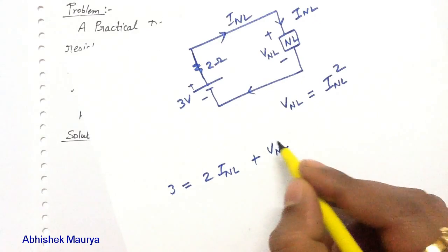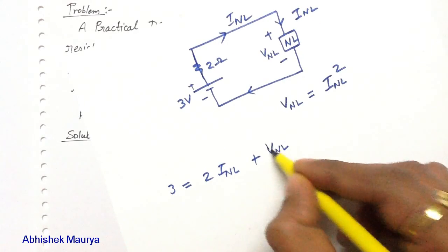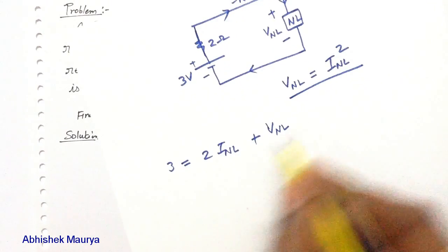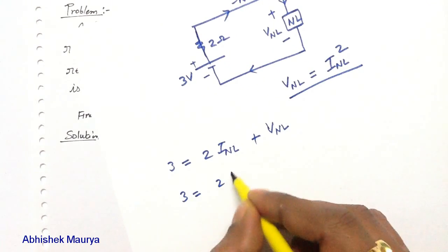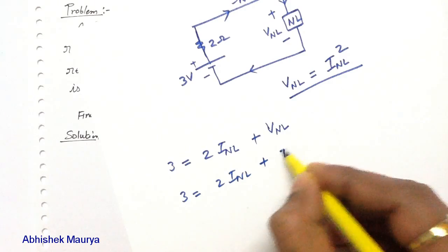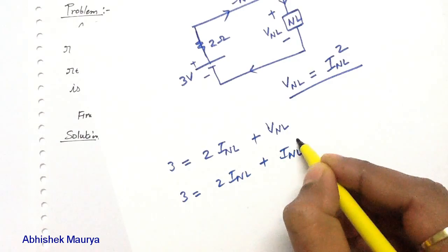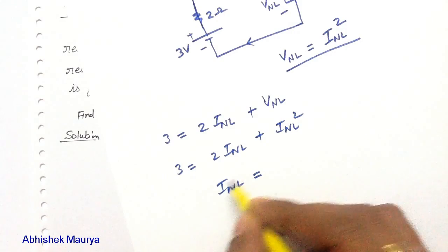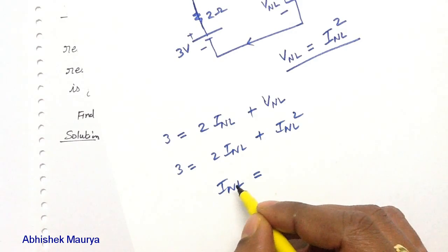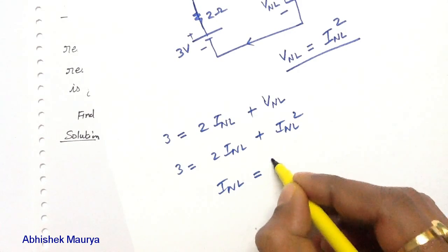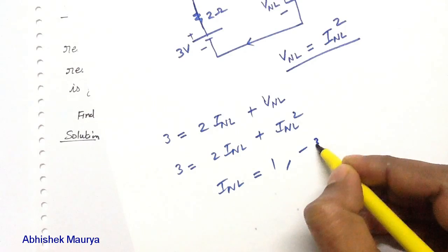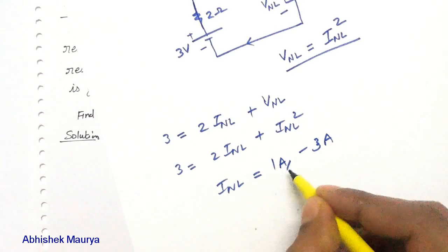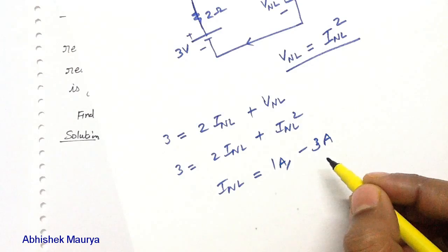You can substitute the value of the voltage drop across the non-linear resistor, which is given as V_NL equals I_NL squared. Solving this equation, you will get the current through the non-linear resistor — two values: 1 A and minus 3 A.